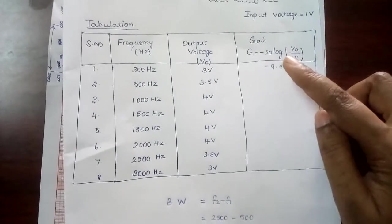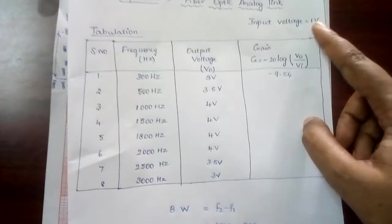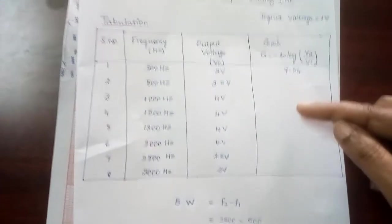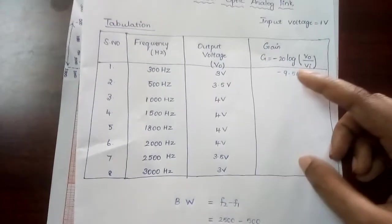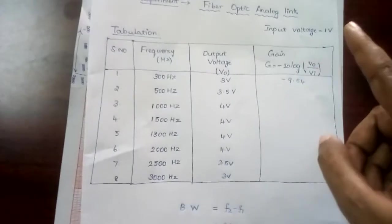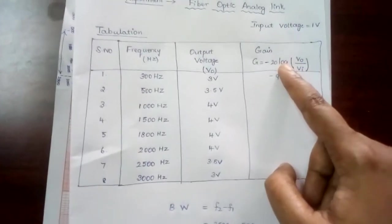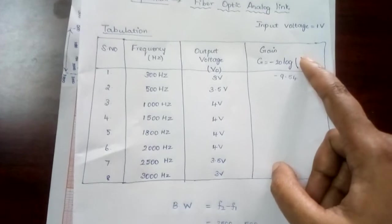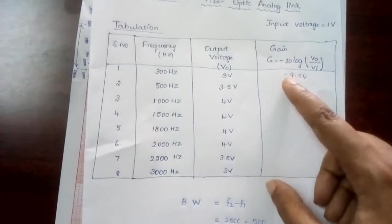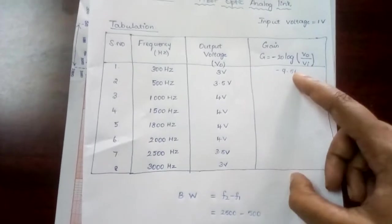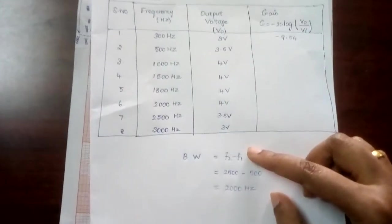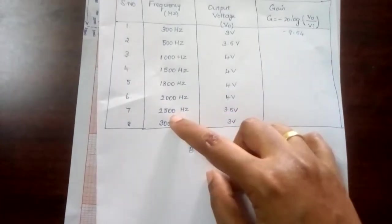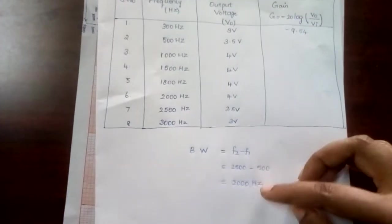The gain formula is: G equals minus 20 log of V0 divided by V1, where V0 is the input. The remaining values — find the answers and send them. For V0 value 3 and V1, use the scientific calculator with the log function. That log value multiplied by minus 12 gives the result. For bandwidth calculation: maximum frequency at 2500 minus 500 equals 2000.